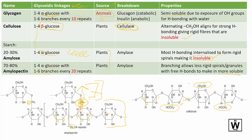We don't have the cellulase enzyme to break down cellulose, though some organisms do. We do have amylase in our saliva, which breaks down starch — both the amylose and amylopectin molecules.